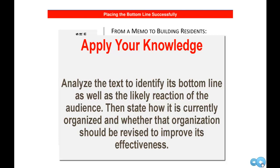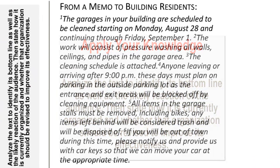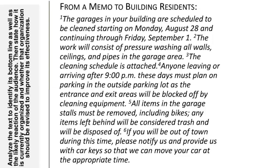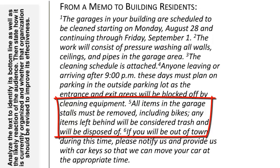Now it's time to check your understanding of bottom line placement by revising a passage you haven't seen before. The question asks that you identify the bottom line, state how it's currently organized, and whether that organization is effective. This passage comes from a memo to residents of a condo building. The sentence labeled five is the best candidate for the bottom line. While the writer wants to provide residents with information, the memo will be a success only if residents actually move their belongings — so the primary purpose is directing rather than informing. Sentence five appears near the end, meaning the writer has used indirect organization, but since the bottom line is not personal or unique, direct organization would be more effective. Sentence five should appear as the first or second sentence of the memo.